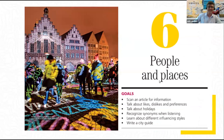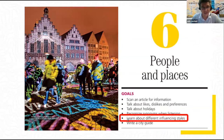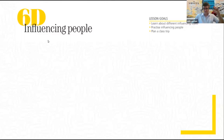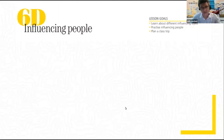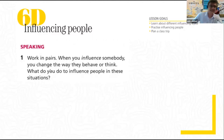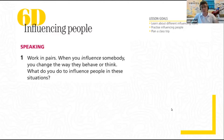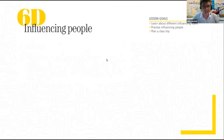There are six goals in this unit, and we're going to be looking at this one: 'learn about different influencing styles.' This is lesson D of unit six. Every lesson in Voices starts with a speaking activity. The activity here involves talking about what you do to influence people — but first I want to discuss what the word 'influence' actually means.